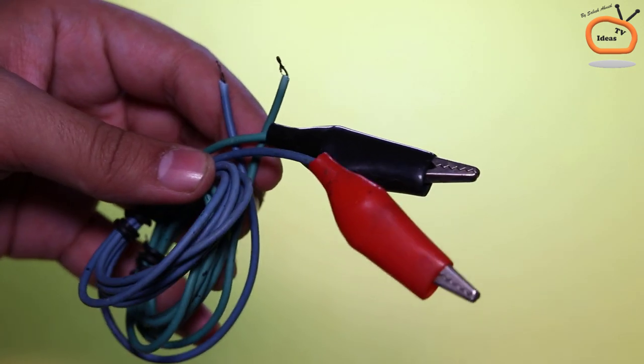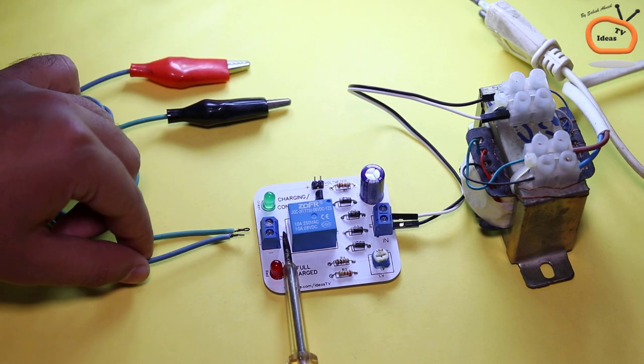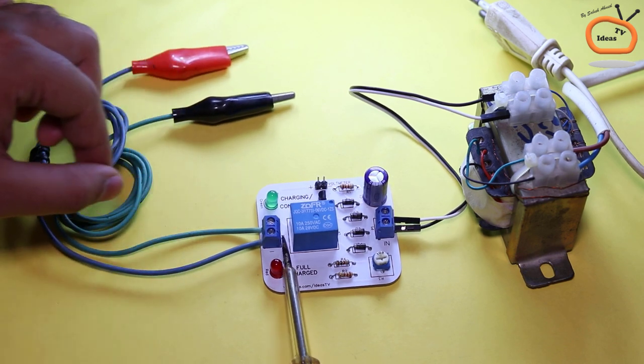Here you will need a pair of crocodile clips with cable. Connect the crocodile clips to the 12V DC output of the circuit.